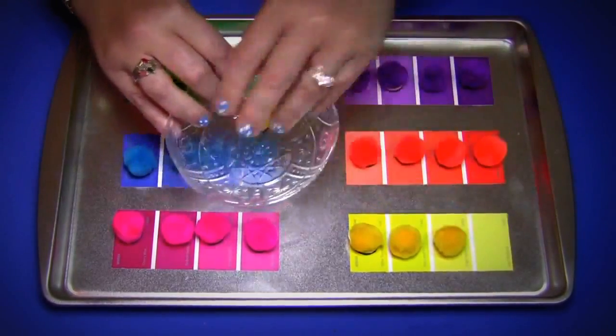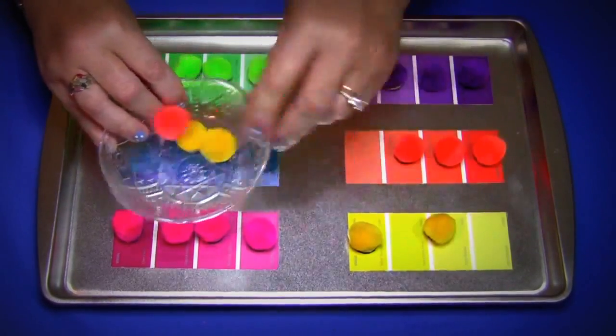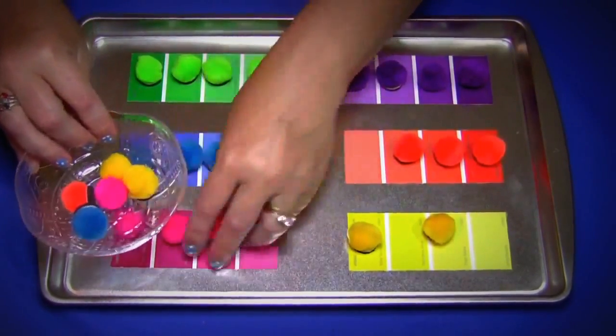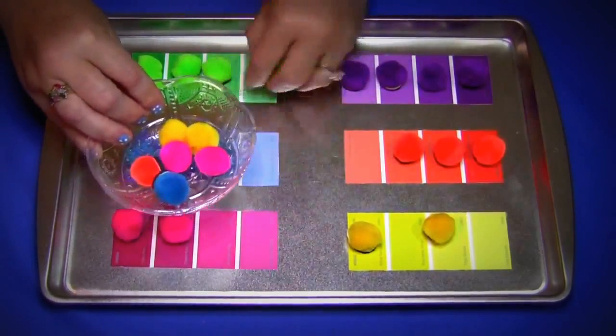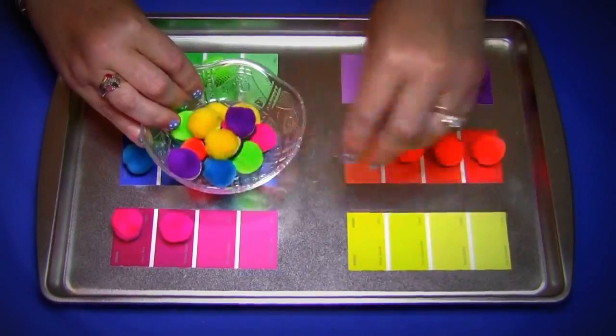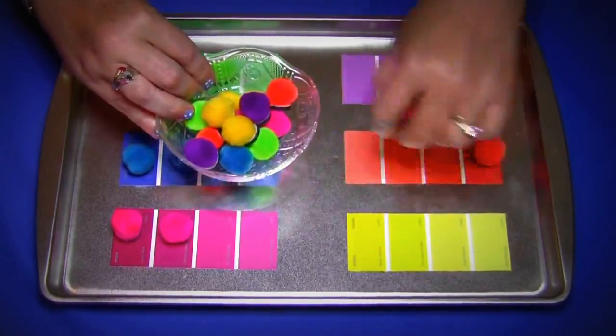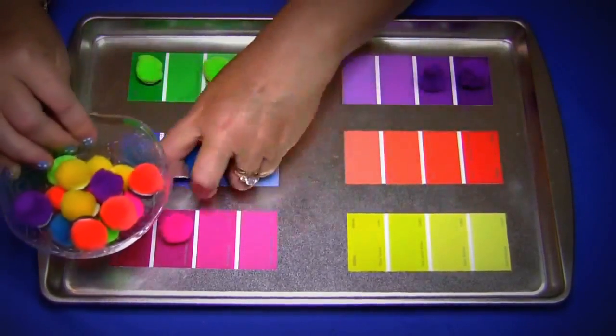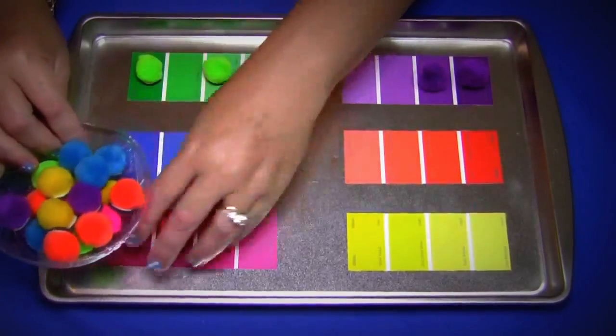So what would happen is you have your pom-poms in some kind of container. I just use a bowl. You already have your strips out on the tray, and then the child will come and sit down and put all the pom-poms onto the paint chip samples that you have out here.